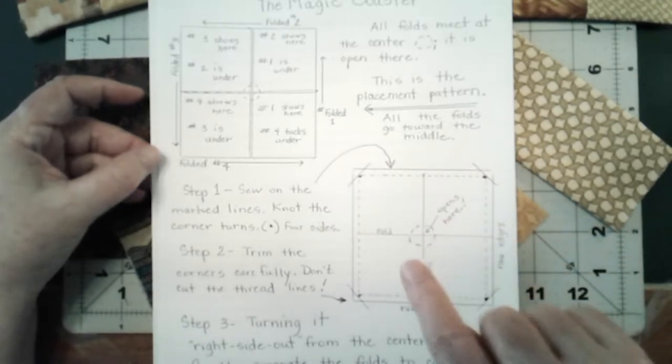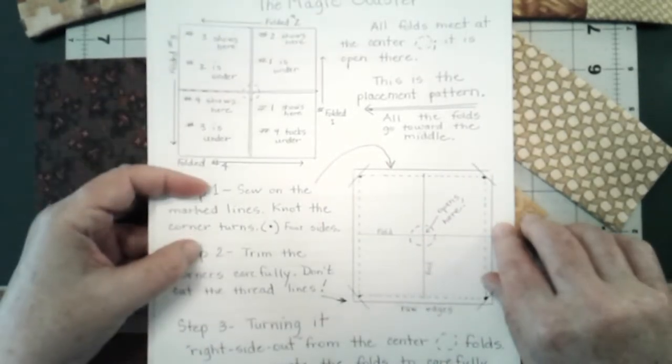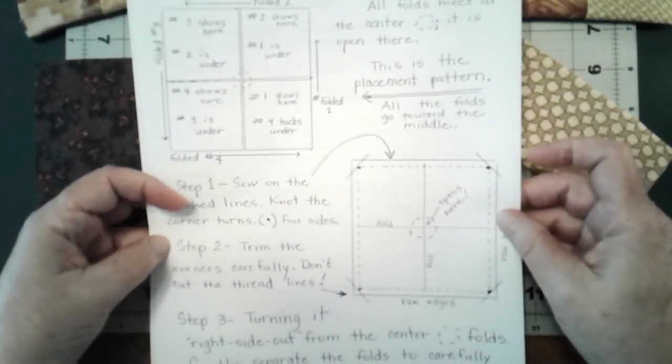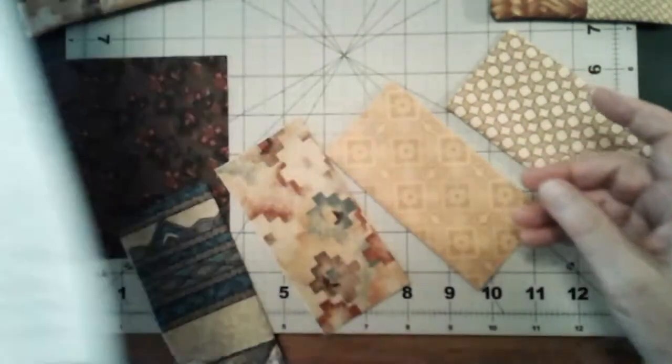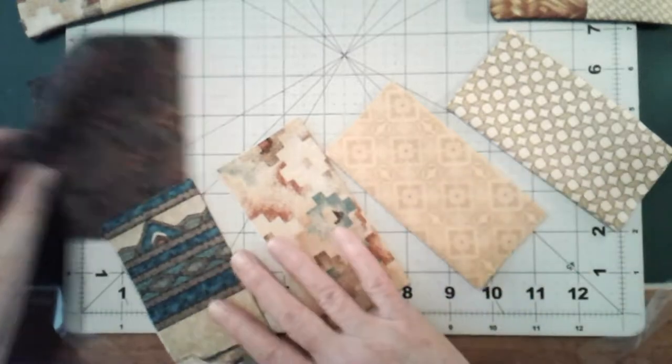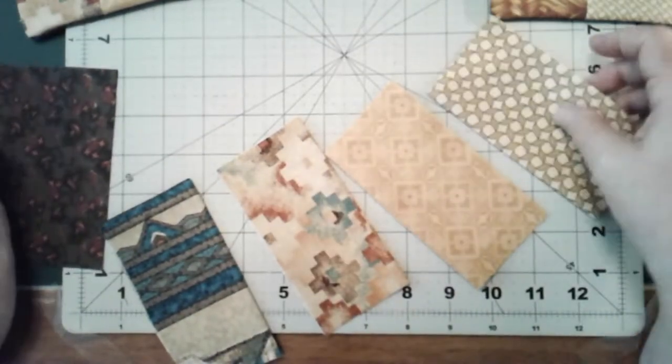I will show you that right now. If after I show it to you, you'll probably understand my diagram better. Here are our five squares. Four of them have been folded in half.